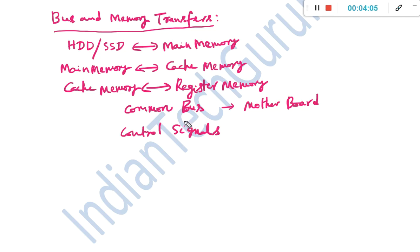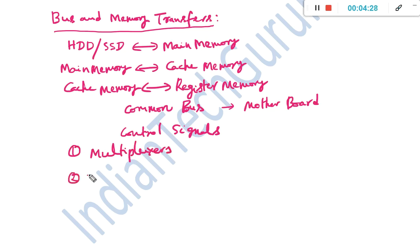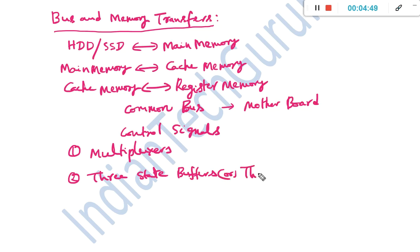To implement the bus system, we may use two basic building blocks: multiplexers and three-state buffers, also called three-state bus buffers. Either multiplexers or three-state bus buffers can be used to construct a bus structure.